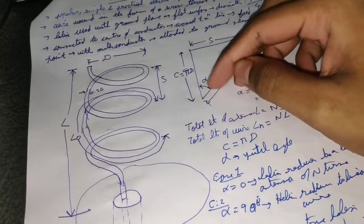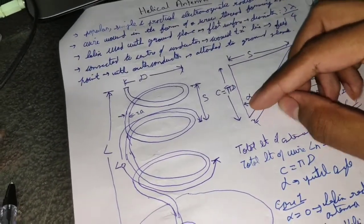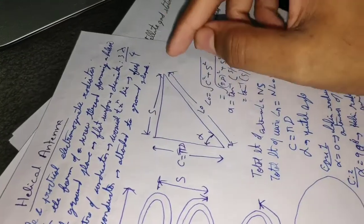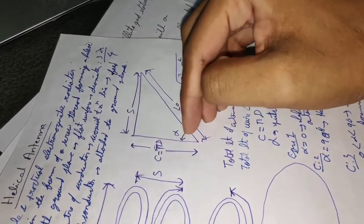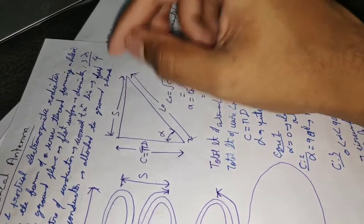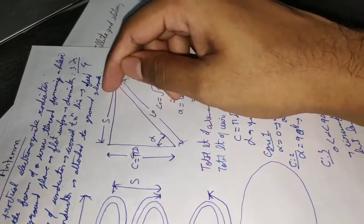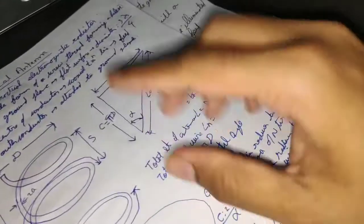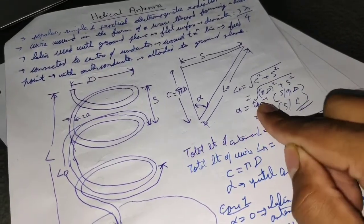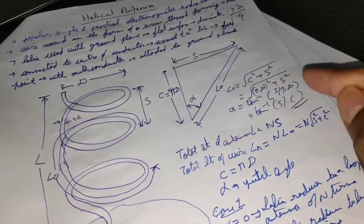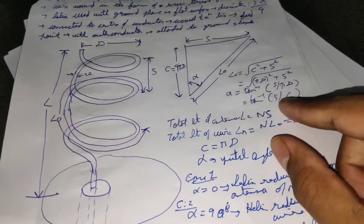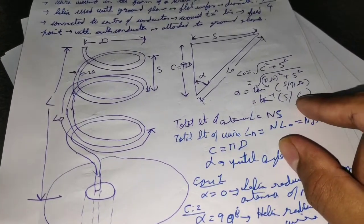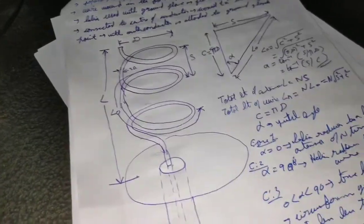For the pitch angle α: since the right angle is at the base and α is opposite to S, we get tan α = S / (πD) = S / C. Therefore, α = tan⁻¹(S / πD), which can also be written as tan⁻¹(S / C).